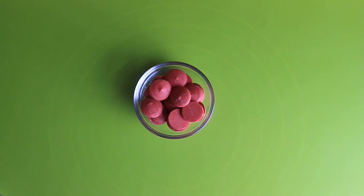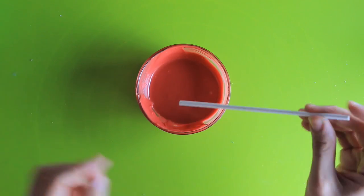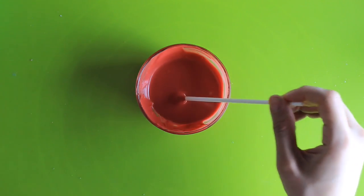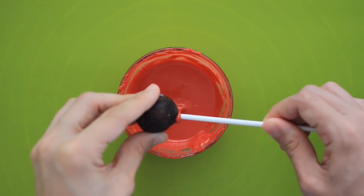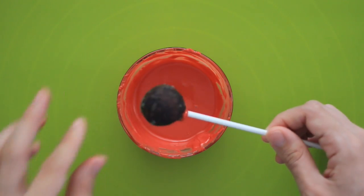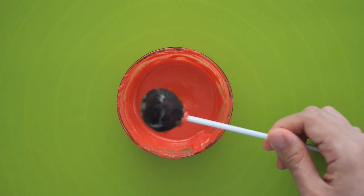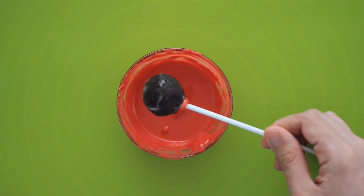Microwave your candy melts at 30-second intervals. Stir until smooth and completely melted. Take your stick and dip it inside the candy melt. Insert the stick halfway into the doughnut hole. Place your pops on a cookie sheet and leave them in the refrigerator for a couple of minutes. This will prevent the cake pop from falling off the stick.